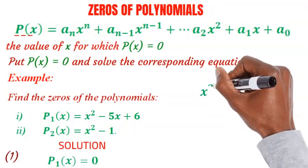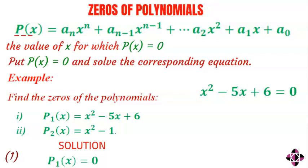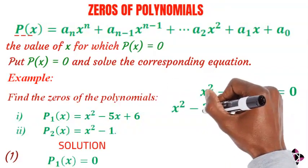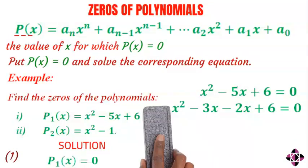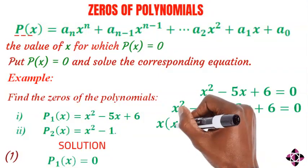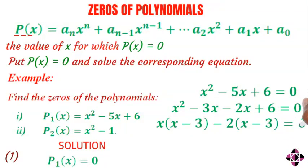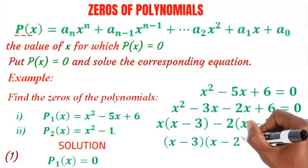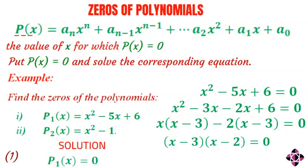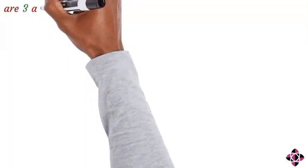We have x squared minus 5x plus 6 equals zero. Breaking it down: x squared minus 3x minus 2x plus 6 equals zero. Factorizing, we get x into x minus 3 minus 2 into x minus 3 equals zero. Factoring it out gives x minus 3 times x minus 2 equals zero. Hence, the zeros of p of x equals x squared minus 5x plus 6 are 3 and 2.